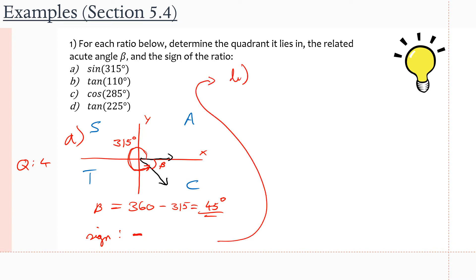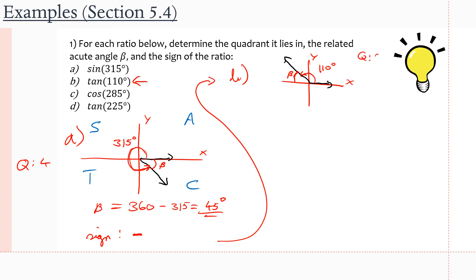Let's move on to B. We draw our Cartesian plane and our initial arm. We have tan of 110 degrees. We start at the initial arm and go counterclockwise to see where our terminal arm lies. We go past 90, but not past 180, because 110 is less than 180. Here is where our terminal arm lies. This angle is 110 degrees, and the angle that the terminal arm makes with the x-axis is beta, our related acute angle. We can note already that we are in quadrant two.